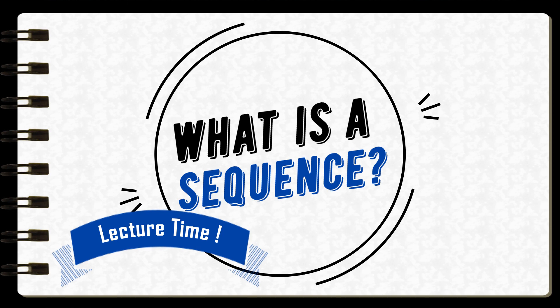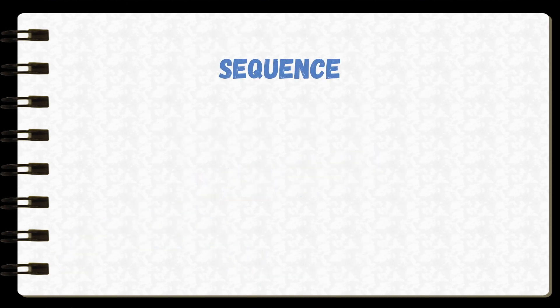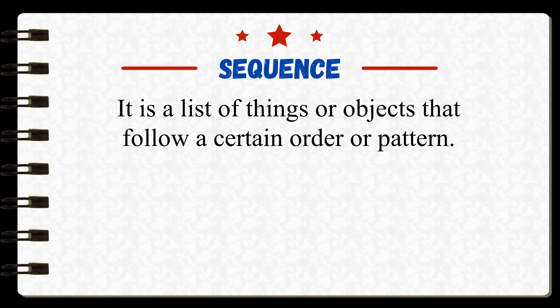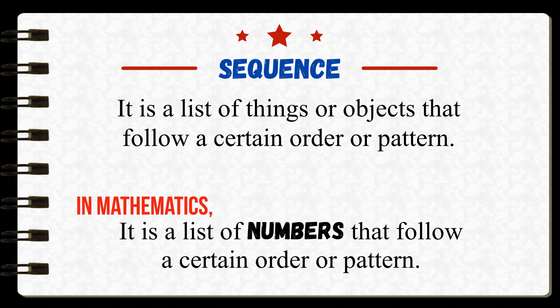So what is a sequence? Sequence is a list of things or objects that follow a certain order or pattern. In mathematics, it is a list of ordered numbers.